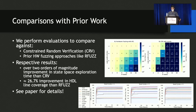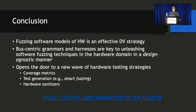Lastly, we performed several other evaluations in the paper to compare hardware fuzzing against existing DV techniques like CRV and some prior hardware fuzzing approaches. In conclusion, fuzzing is an effective strategy for automating hardware DV and is made practical and performant using bus-centric grammars and harnesses. What's really exciting about this work is that it opens the door to an entirely new wave of hardware testing strategies, including developing advanced coverage metrics, developing test generation schemes, and even hardware sanitizers to identify common bugs. If you're interested, we invite you to check out our open-source code base on GitHub. Thank you for listening, and I will take any questions.